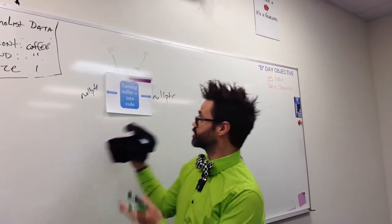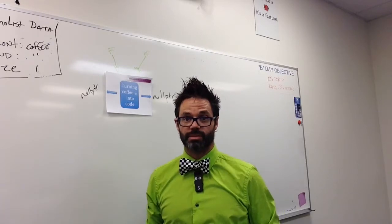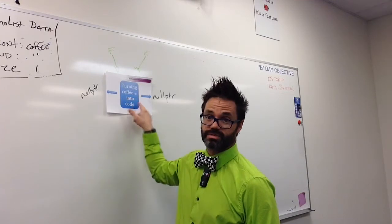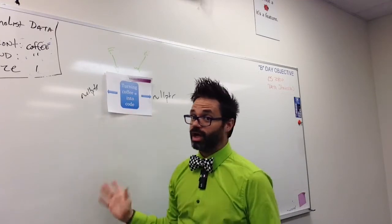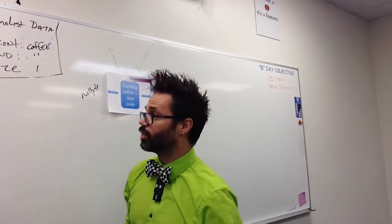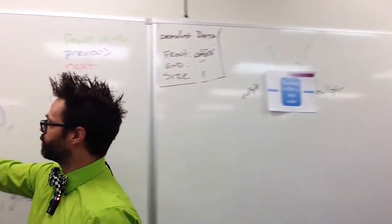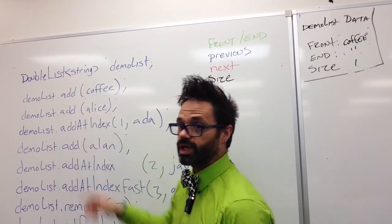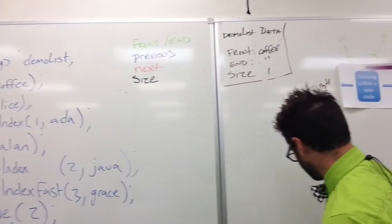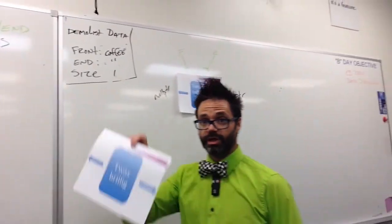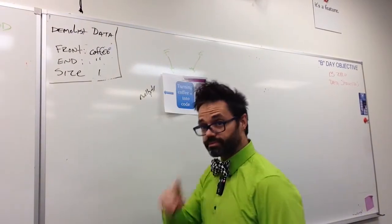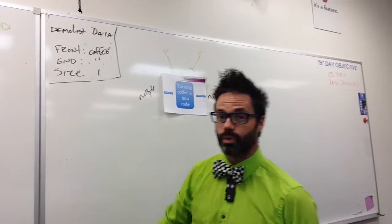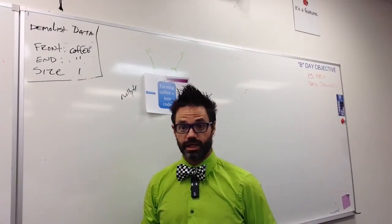So there's our list at size one — just that node all by itself, with front and end pointing to it, and its previous and next pointers both pointing to null. Our next step is demo list dot add, passing it the Alice string. So we're making a brand new node pointer. In my code I call this the add me pointer. The add method adds to the end by default.